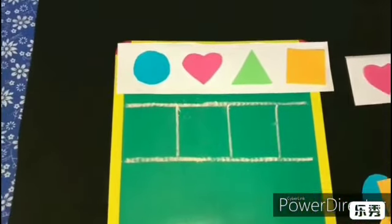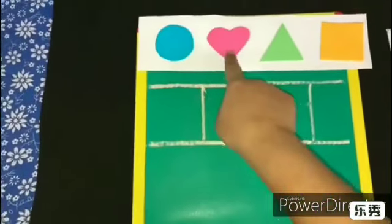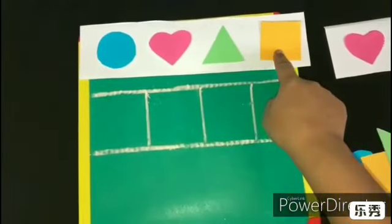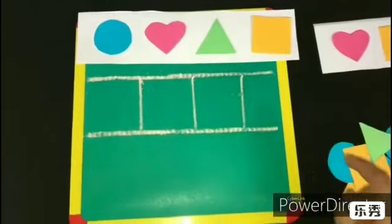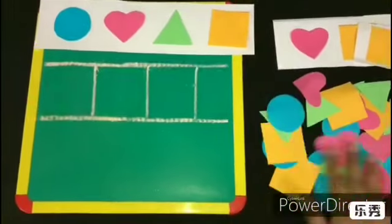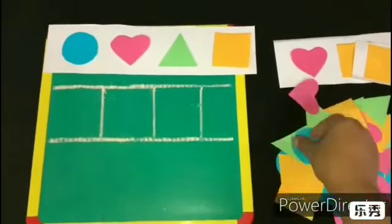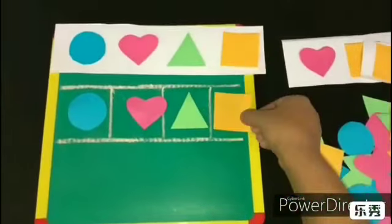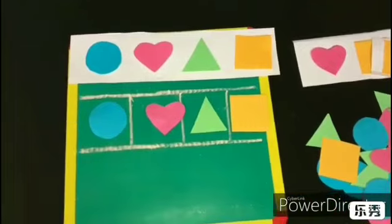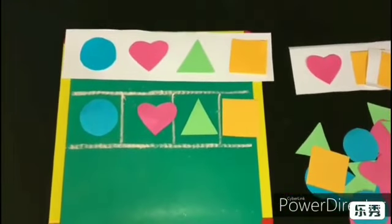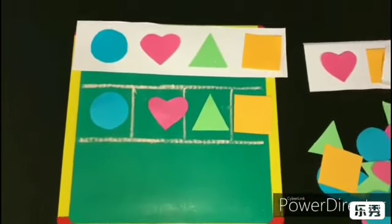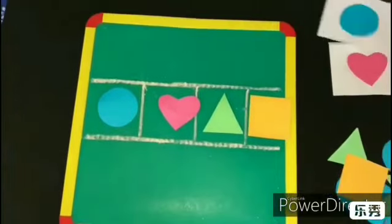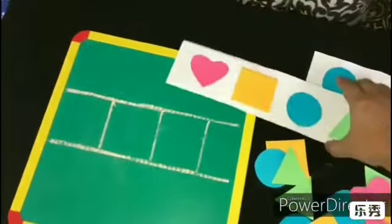Now, the pattern says circle, heart, triangle and square. We have to again sort the shapes according to the given order. Very good! This way we are going to play the game and the activity, and we are going to take another stencil and another pattern.